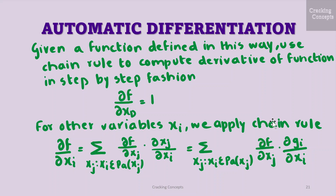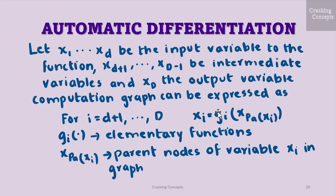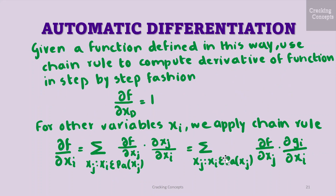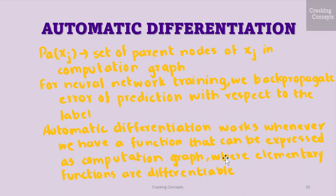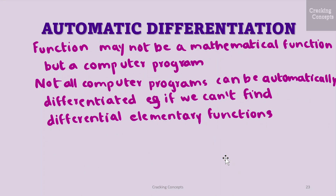The forward propagation equation computes the function, whereas the backward propagation equation propagates the gradient backward through the computation graph. For neural network training, we back-propagate the error of prediction with respect to the label. Automatic differentiation works whenever we have a function that can be expressed as a computation graph where the elementary functions are differentiable. In fact, the function may not even be a mathematical function but a computer program. However, not all computer programs can be automatically differentiated — for example, if we cannot find differentiable elementary functions. Programming structures such as for loops and if statements require more care as well.